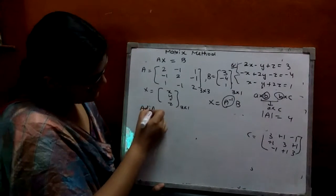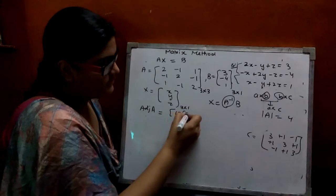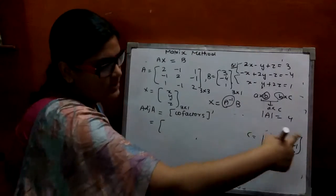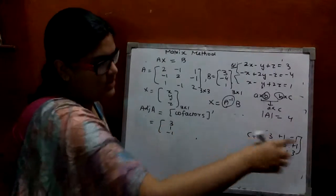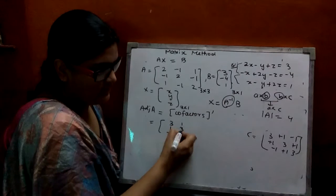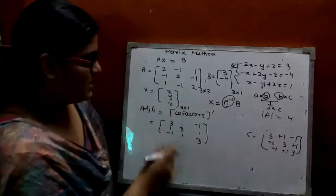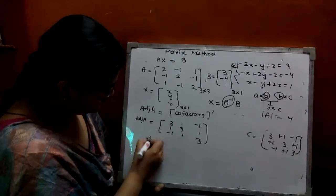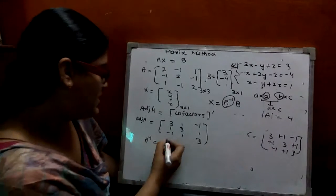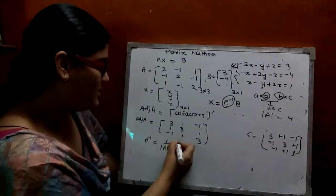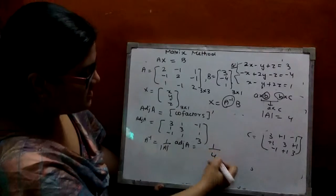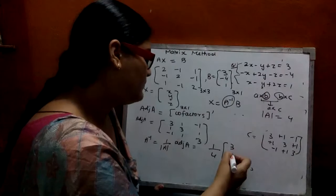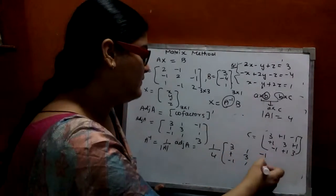For the adjoint, you take the transpose of the cofactors — rows become columns. Taking transpose: row 1 becomes column 1, row 2 becomes column 2. You now have the adjoint. You have A determinant as 4. So A inverse is 1 upon A determinant times adjoint A. The adjoint A matrix gives elements: 3, -1, -1; -1, 3, -1; -1, -1, 3 transposed.